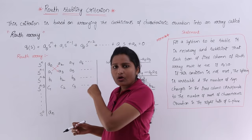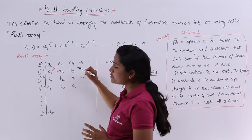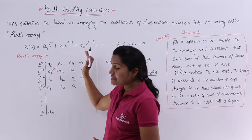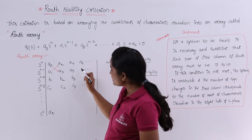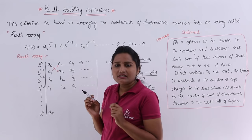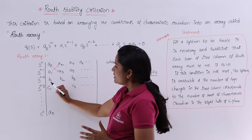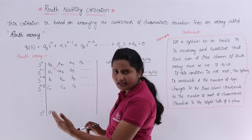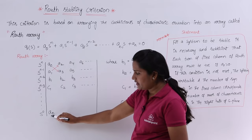For example, if you have coefficients only up to a₅, you stop the array there. If you have up to a₆, place a₆ and put 0 in the remaining spot. The first two rows must include all the coefficients of the characteristic equation, and after that, the subsequent rows are labeled b₁, b₂, b₃, c₁, c₂, c₃, d₁, d₂, d₃, and so on down to aₙ.